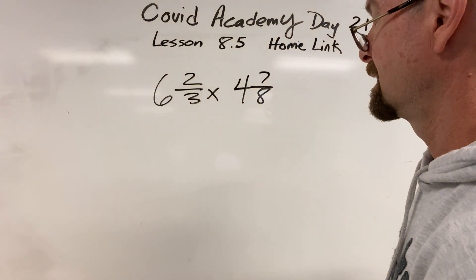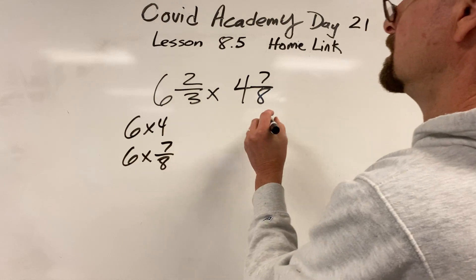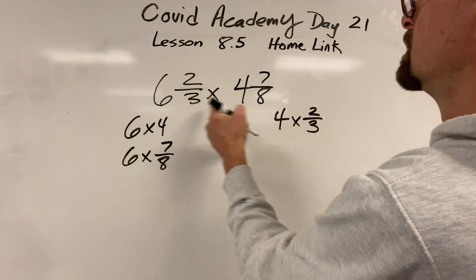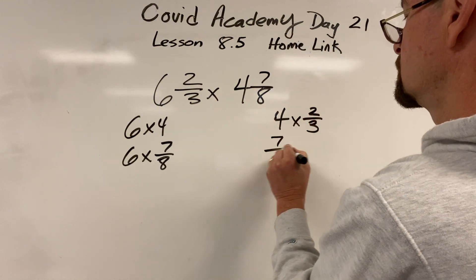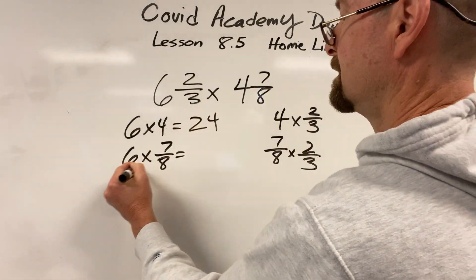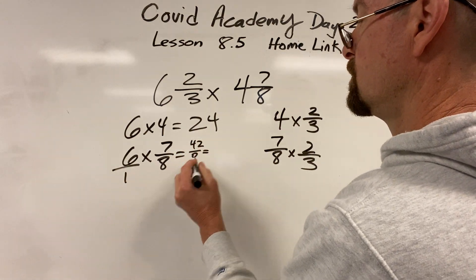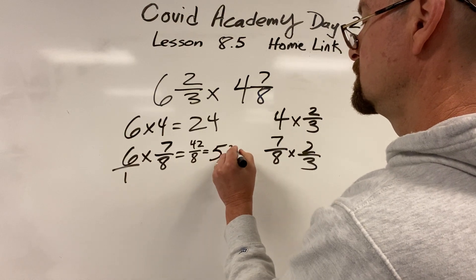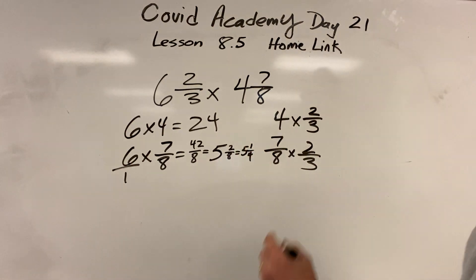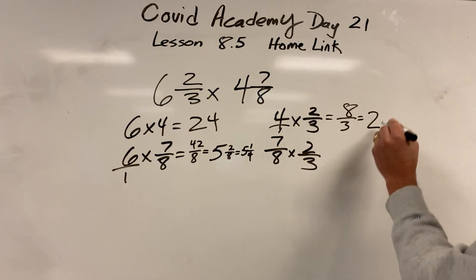I think we're going to have to do this the complicated way. Six times four, six times seven-eighths. Four times two-thirds and the seven-eighths times two-thirds and put them all together. It's not easy, guys. That's 42 eighths, which is five and two-eighths, which is five and a fourth. Alright, that's eight-thirds, which is two and two-thirds.